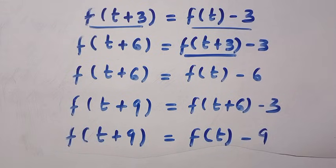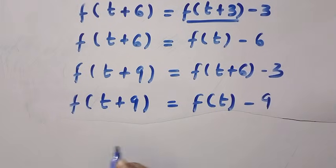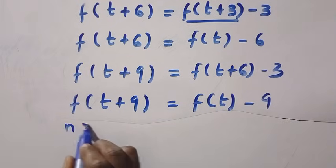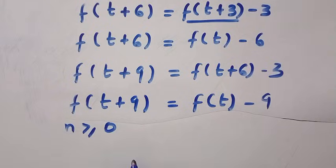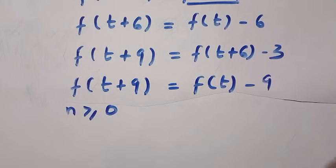Then, in a general form, we are going to look for n. If n is greater than or equals to 0, we are going to have for n greater than or equals 0.